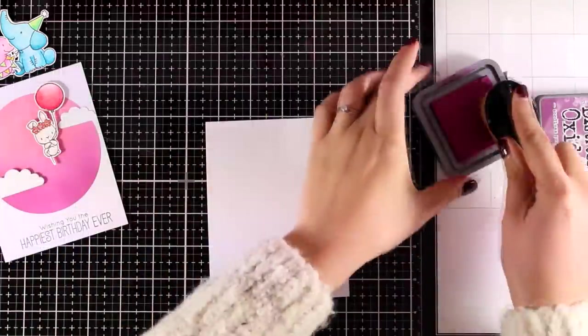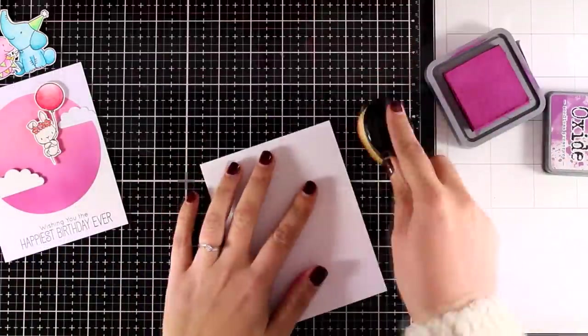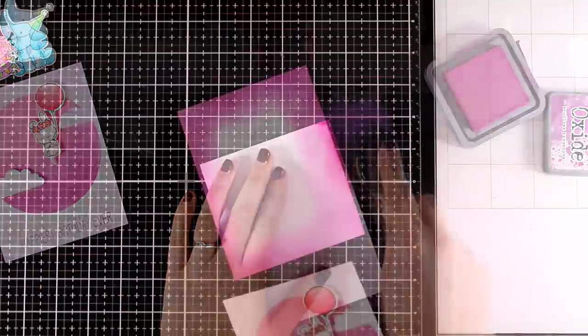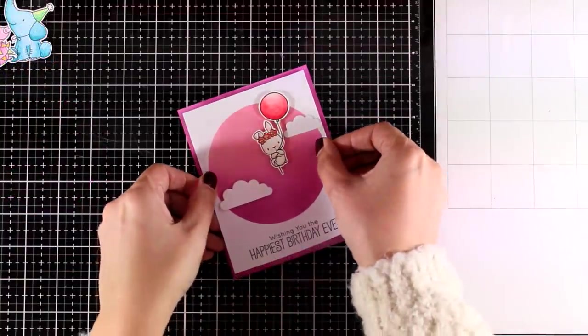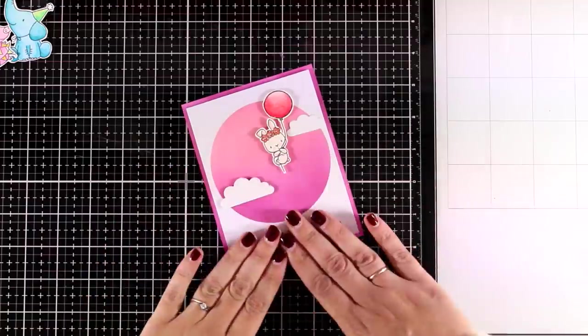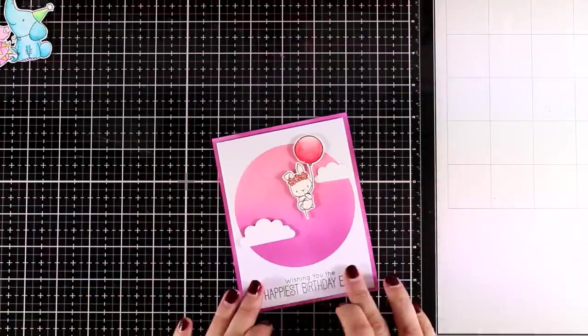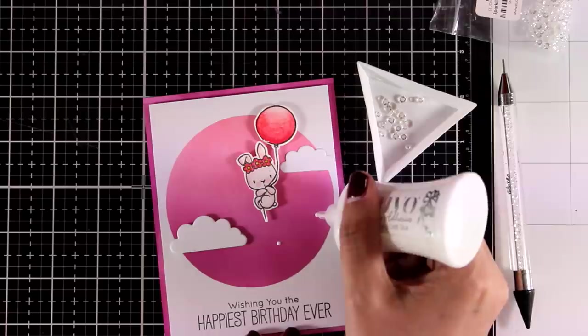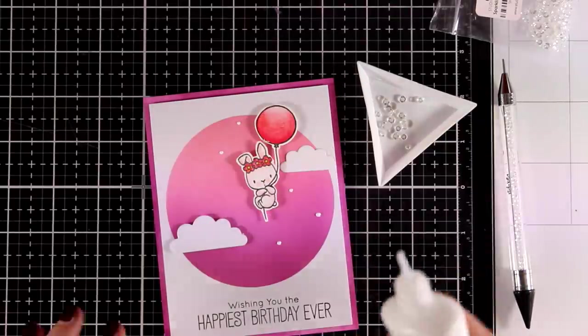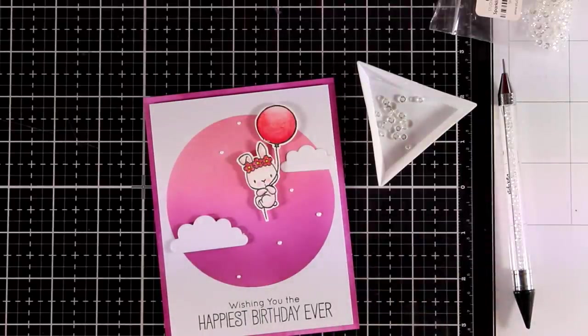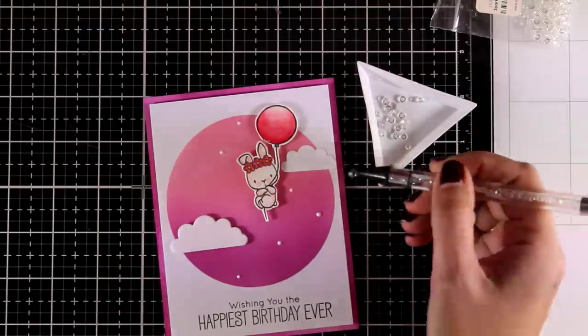I stamped the sentiment with black ink at the bottom, and the sentiment also comes from the same stamp set. I inked up the edges of my card base to match the colors of the main area, and I'm just sticking on top my panel. I have a lovely card ready to go. You can embellish it with some gems like I always like to do, and my card is ready.